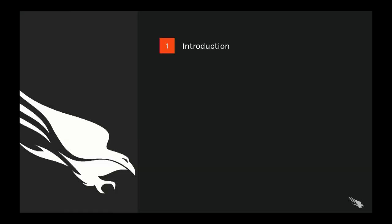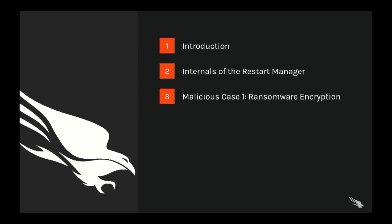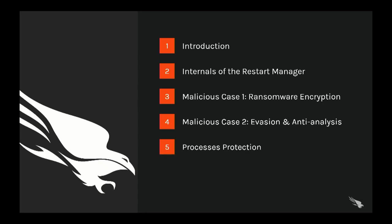Today we're going to first focus on the Windows Restart Manager. We'll begin with an introduction to understand how and why it has been implemented in Windows. We'll dive into its internals to better understand how it works under the hood. We will see that it can be hijacked for malicious purposes, using real-world examples to see that it has been used to support ransomware encryption and to perform evasion and anti-analysis purposes. We will then briefly talk about how processes can protect themselves against this type of hijack, and conclude with some thoughts.